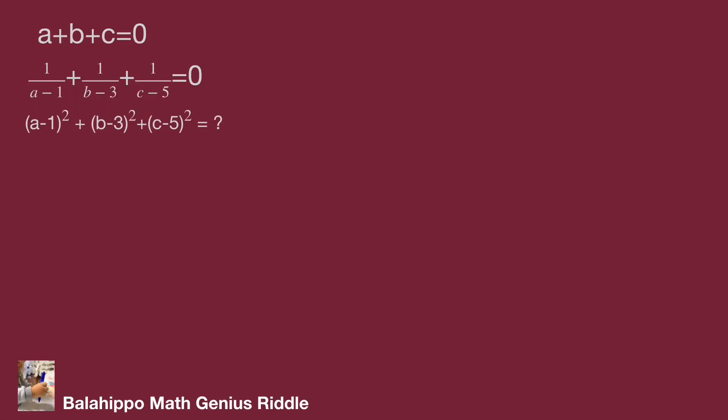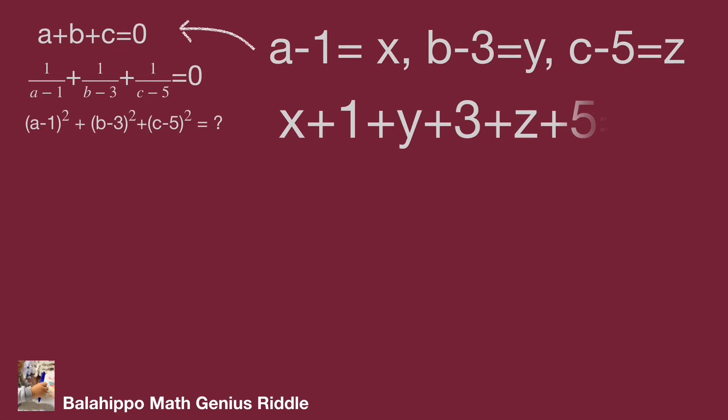From the given equations, search for the relationship among them. We redefine a minus one equal to x, b minus three equal to y, and c minus five equal to z. Substitute these values into a plus b plus c equal to zero, then simplify it.